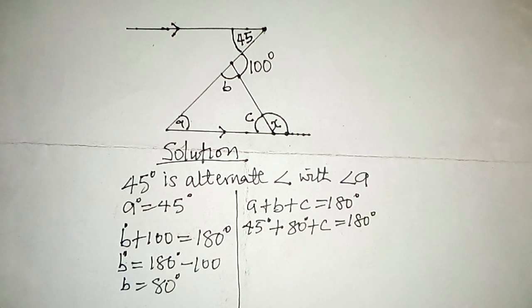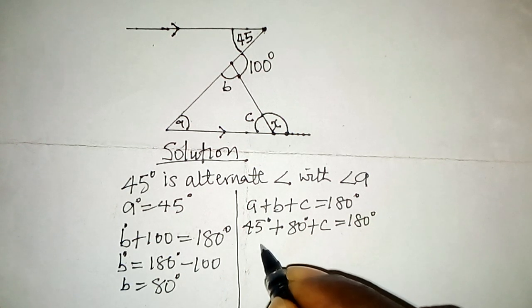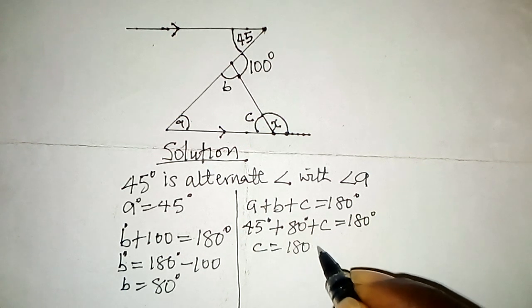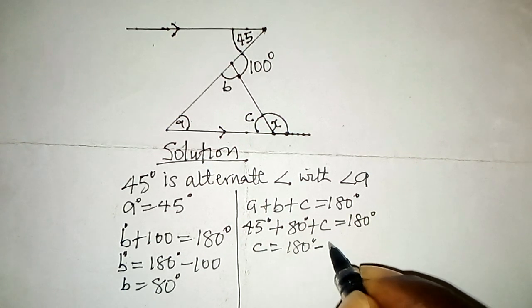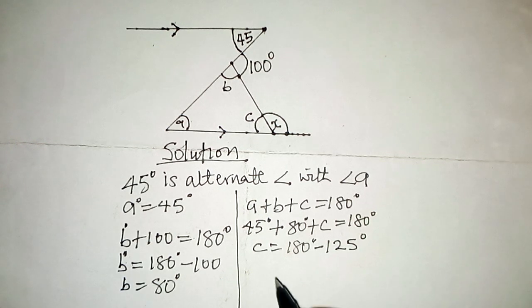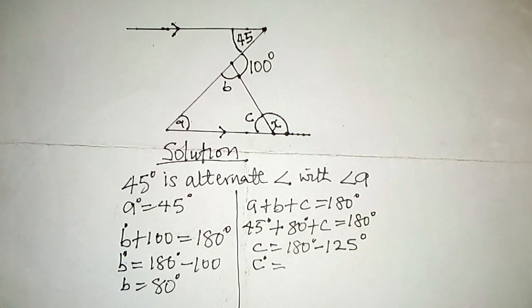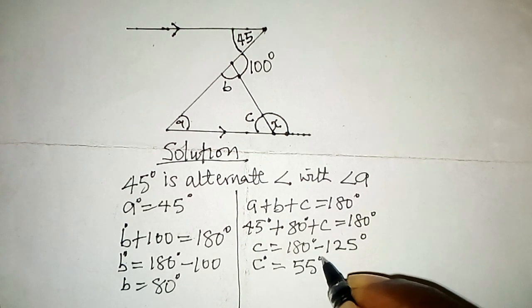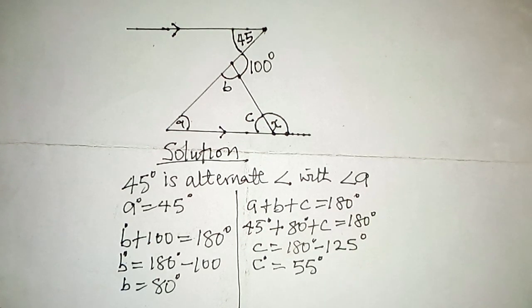Making C the subject, C equals 180 degrees minus 125 degrees. Therefore angle C is equal to 55 degrees.